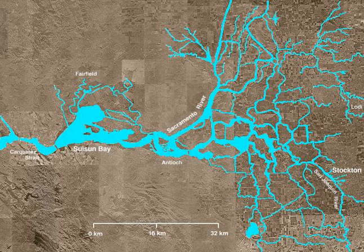Geologically, the delta has existed for about 10,000 years, since the end of the last ice age. In its natural state, the delta was a large freshwater marsh, consisting of many shallow channels and sloughs surrounding low islands of peat and tule.